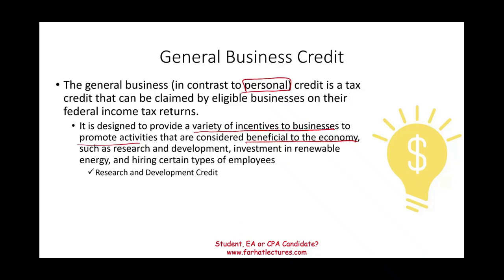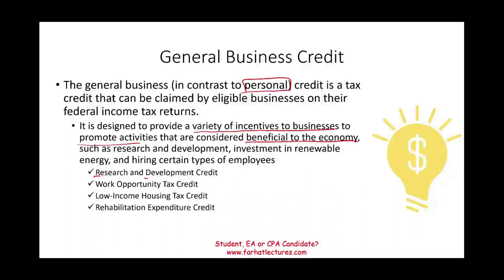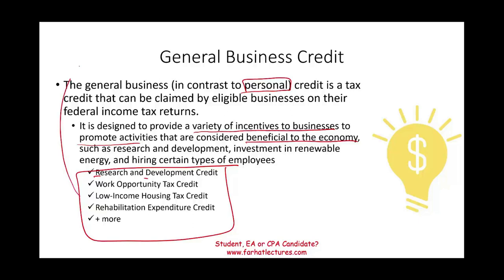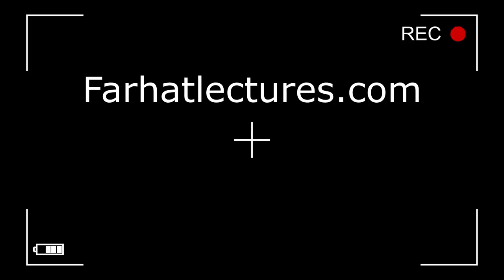For example, you could have a research and development credit, because the government wants to encourage you to conduct R&D — it's good for the economy. We could also have a work opportunity tax credit, a low income housing tax credit, a rehabilitation expenditure credit, and much more. All these credits combined together amount to the general business tax credit.